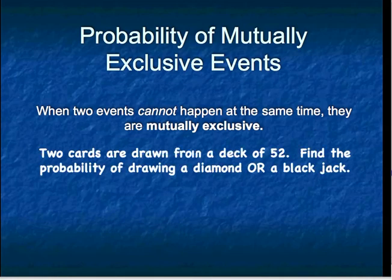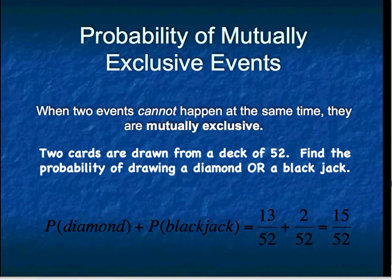Our problem: we're going to draw two cards from a deck of 52 cards. We'd like to find the probability of drawing a diamond or a black jack. The probability of drawing a diamond is 13 out of 52, since 13 cards in the deck are diamonds. There are two black jacks — the jack of spades and the jack of clubs — so that probability is 2 out of 52. When we add those together, we get a total probability of 15 out of 52.